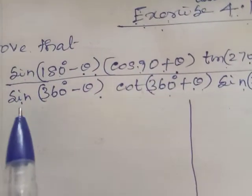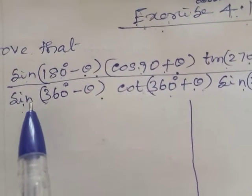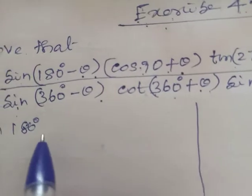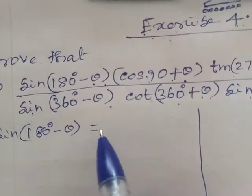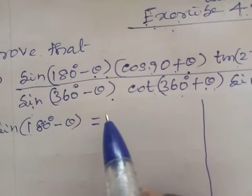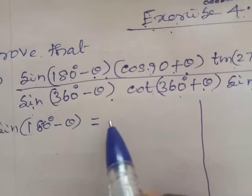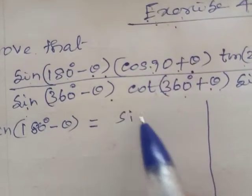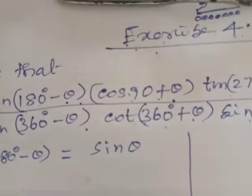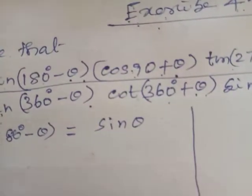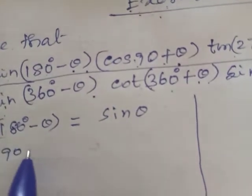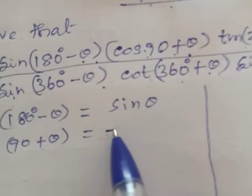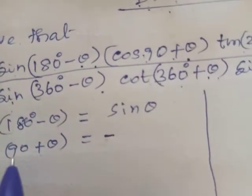Now we can see the value of the numerator. First, Sin(180-θ): using the second quadrant rule, Sin(180-θ) is equal to Sin θ. Next, Cos(90+θ): using the second quadrant rule, Cos(90+θ) gives us minus Sin θ.